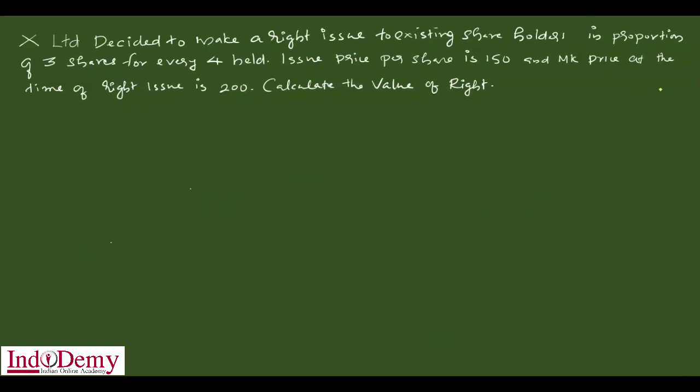Friends, we have a question. X limited decided to make a right issue to existing shareholders in proportion of three shares for every four shares. The issue price of the share is 150 and the market price at the time of right issue is 200.